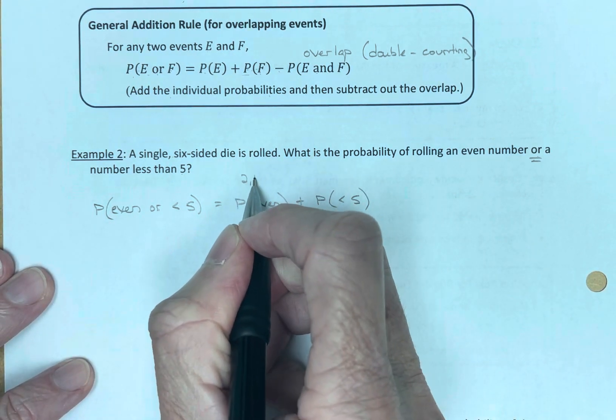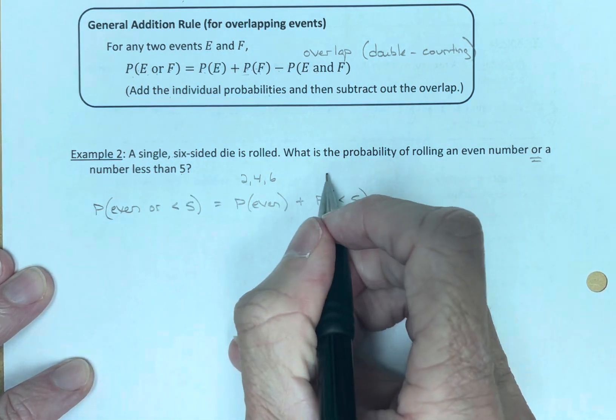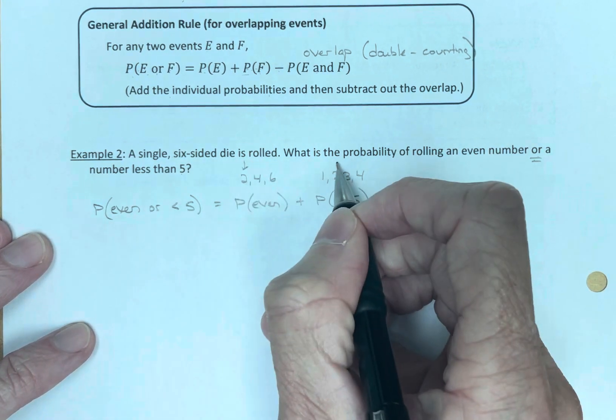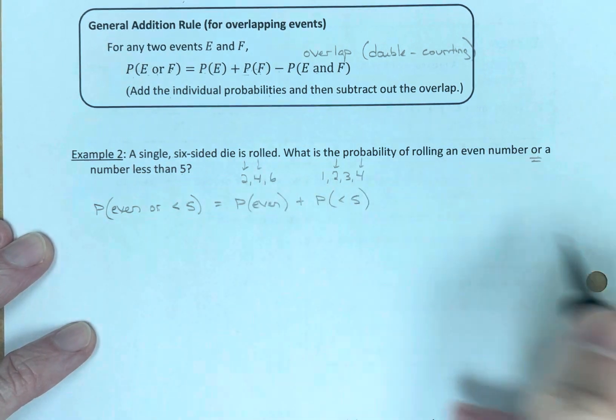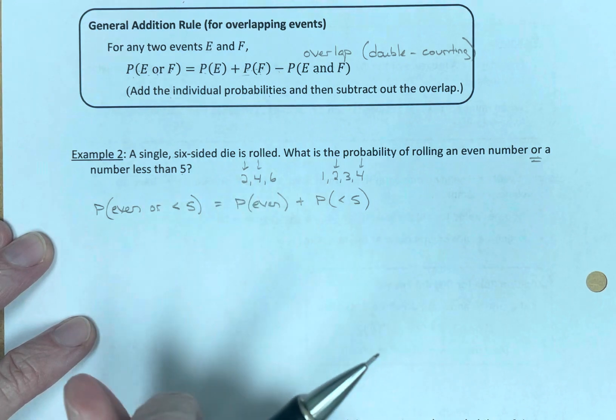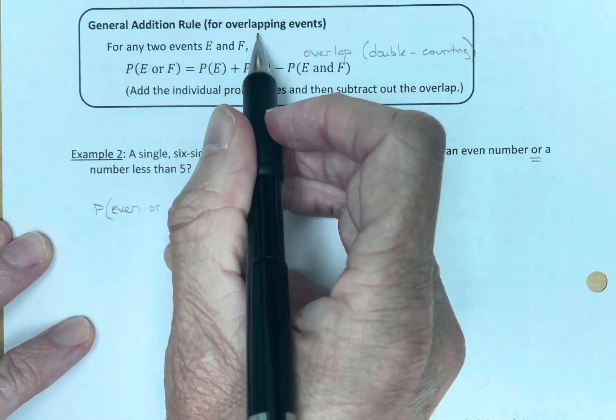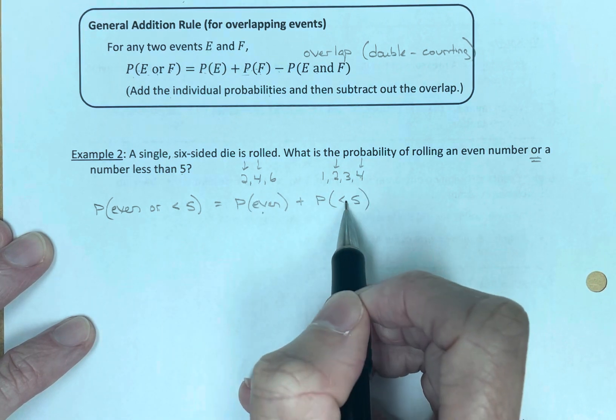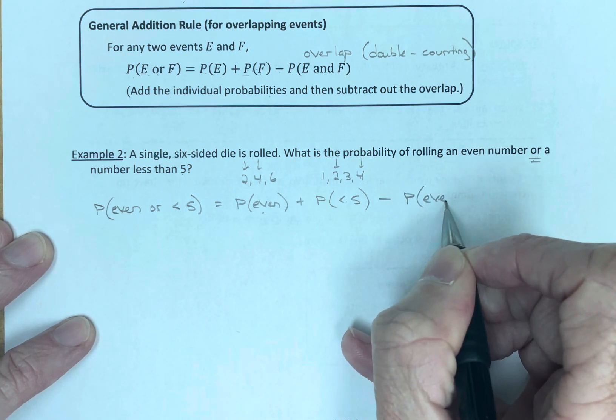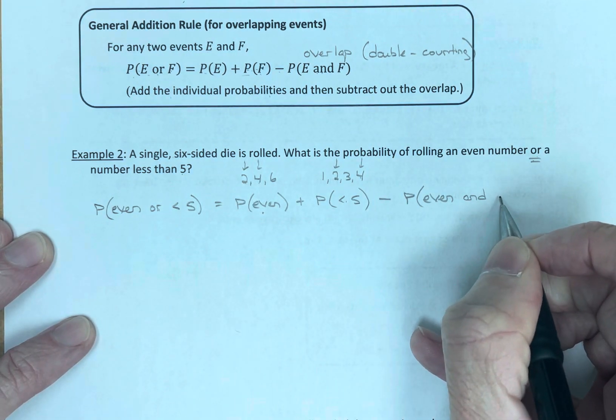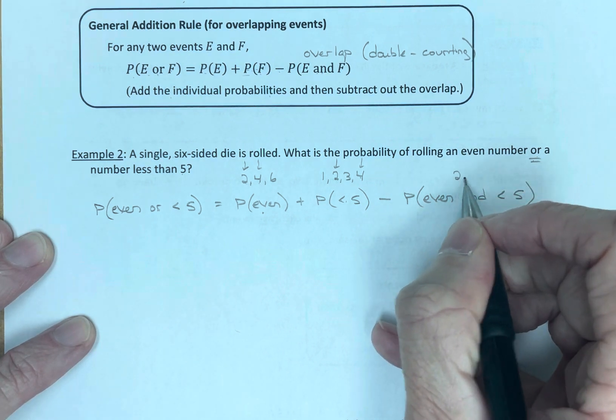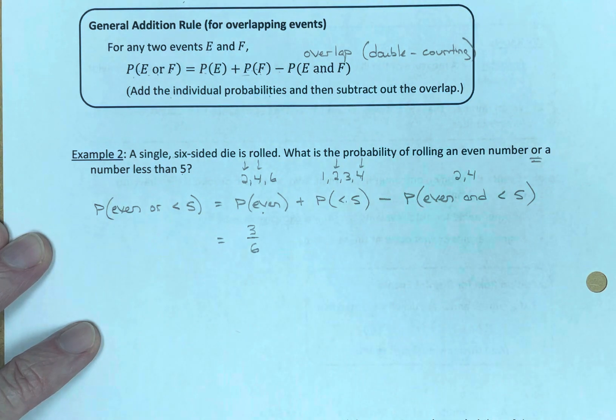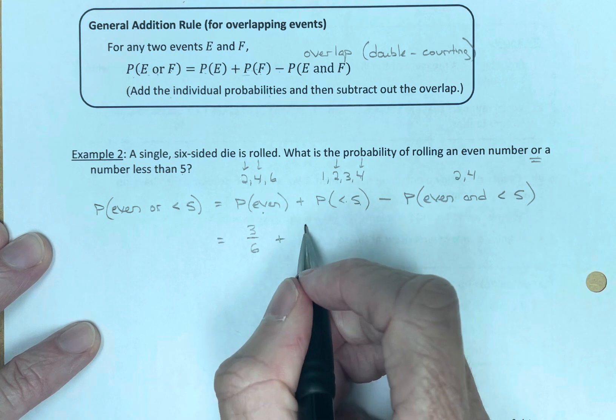Our even numbers are two, four, and six. Our numbers less than five are one, two, three, and four. Notice we counted two twice and we counted four twice. So we need to take out one of those twos and one of those fours. We need to remove the overlap. We don't get to double count. So this is an overlapping thing because they overlap. The two occurs here and here. The four occurs in this probability event and in this probability event. So we got to subtract out the probability that is even and less than five. Well, that's just simply the two and the four. The probability that is even: three out of six. The probability that is less than five: one, two, three, four—four out of six.